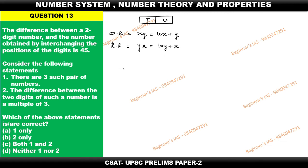Now read the statement: difference between the two-digit number is 45 after interchanging, which means that 10x plus y minus 10y plus x which is equal to 45. Now simplify this: 10x plus y minus 10y minus x which is equal to 45.